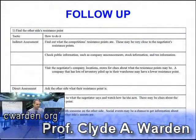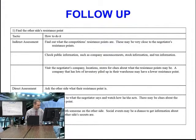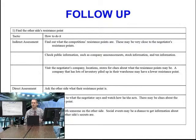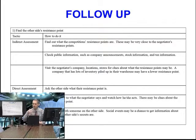I'm not going to go over each one in super detail, but I'd like to quickly shoot over a few of them. Indirect assessment, for example, means how can you find out what the other side's resistance point or target is? You can try to check information — maybe check the newspaper, some articles, the public accounting statements of the other company. Check the internet to find something out about the other side.